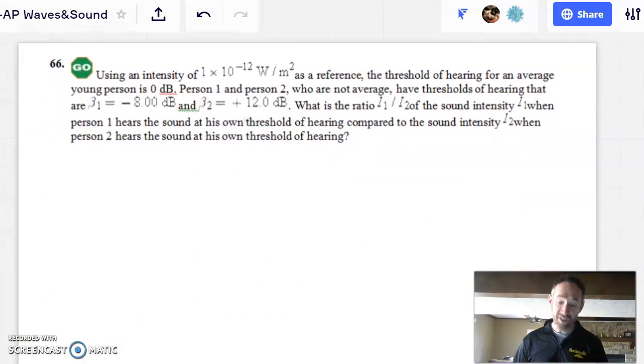Two more quick examples on this video, and this time I have two people. Now, the threshold of hearing is an average. There are people whose hearing is damaged, and they can't hear the sound of the threshold of hearing. And then there are some people that are basically superheroes, and they can hear things that are the threshold of hearing, and they can even hear quieter sounds than that. So look at these two people. In this problem, we have person one and person two. Person one has a threshold of hearing of negative eight decibels, versus person two has a threshold of hearing of positive 12 decibels. Stop for a second. Think about which person you'd rather be.